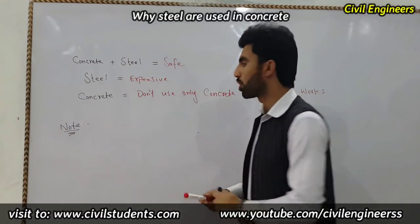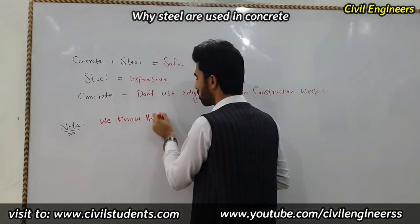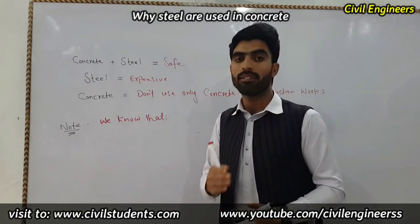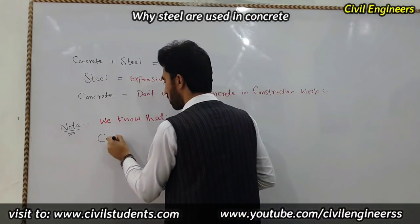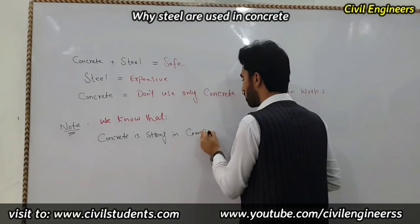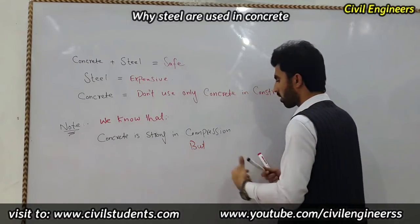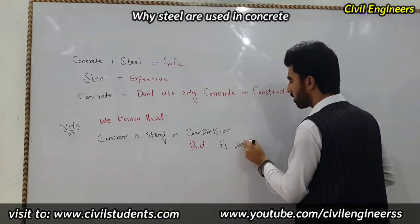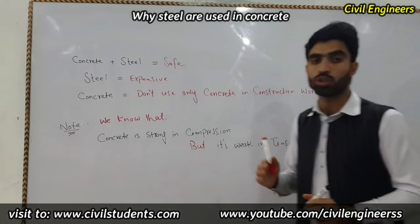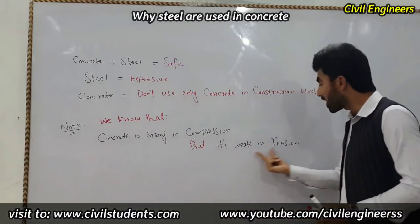That's why we use steel and concrete together for construction works. Concrete is strong in compression but it's weak in tension. Therefore we have to use steel with concrete to save the structure member, because concrete is weak in tension.